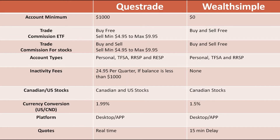If you just want to save on fees and you don't know how much you want to start with — say you want to start with $100 or $200 — you can start with Wealthsimple very easily. On the account types side, Questrade definitely has more options, but when you're starting out you're probably going to use either a personal account, TFSA, or RSP.